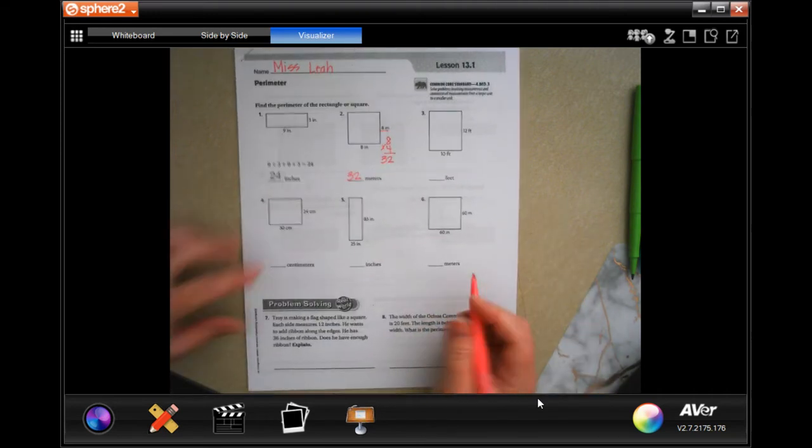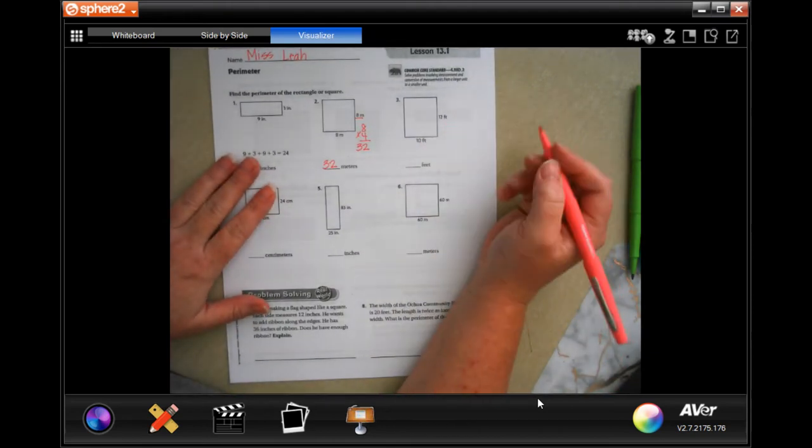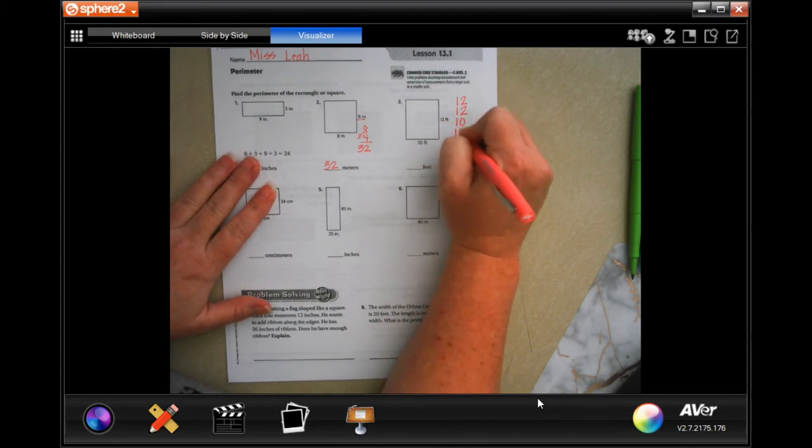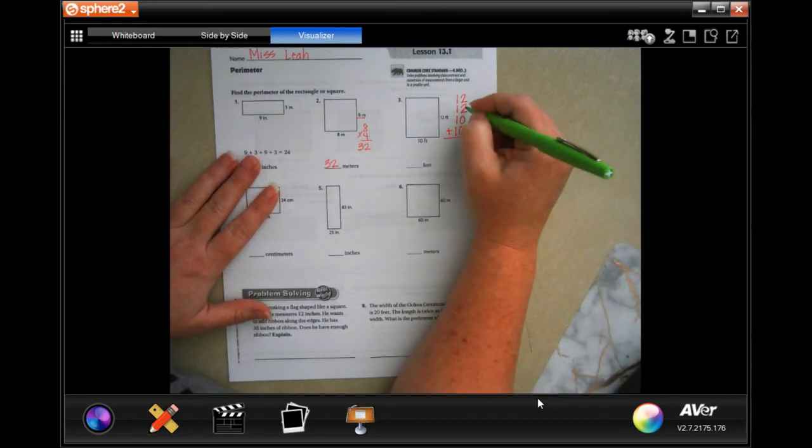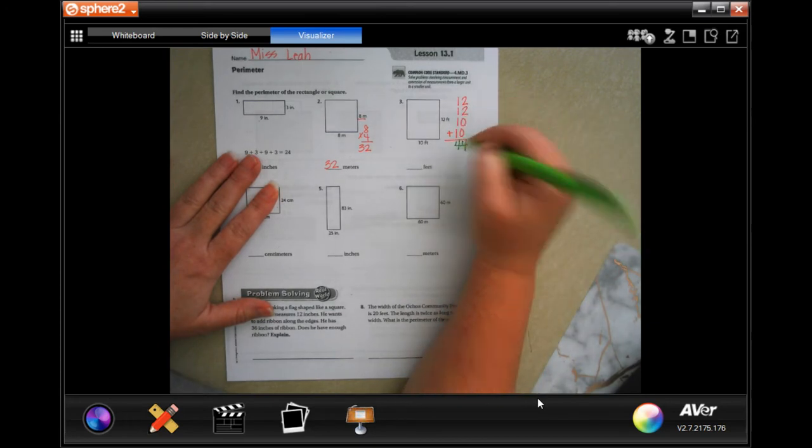Now we have 10 and 12, so that's a little bit different. So 12, 12, 10, 10, we're going to add them up. 2 plus 2 is 4, plus 0 plus 0, still 4. 1, 2, 3, 4—44 feet.